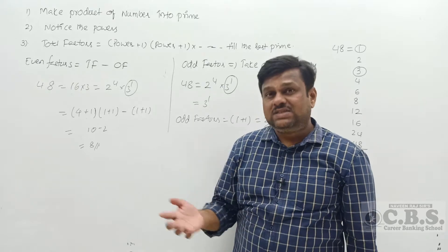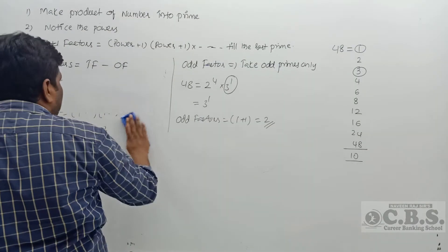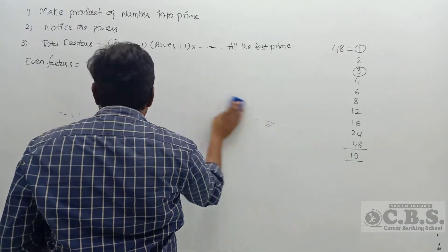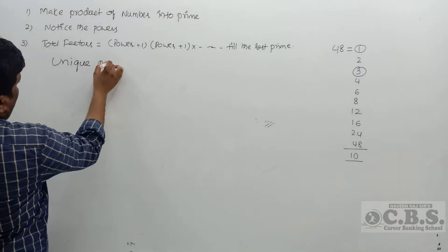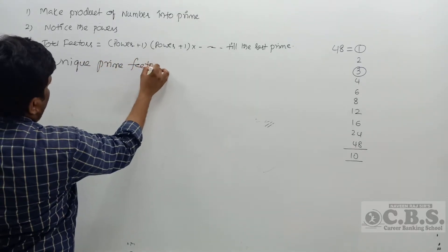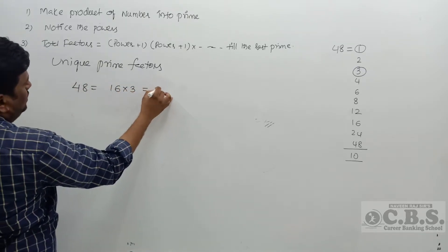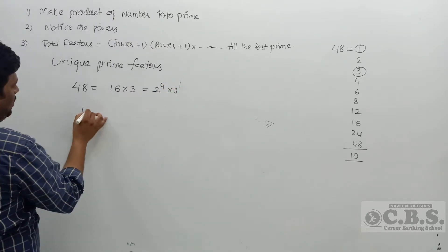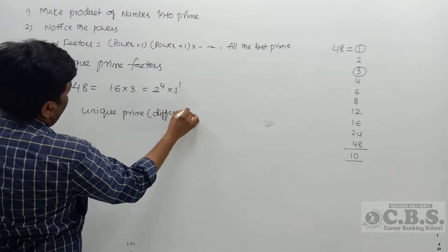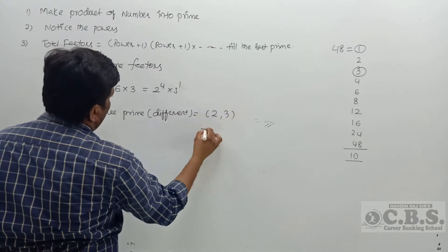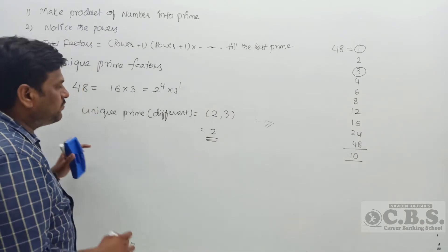Next, find total unique prime factors and total prime factors. For 48 = 2⁴ × 3¹: unique prime factors means different primes — here 2 and 3 — so there are only 2 unique prime factors.